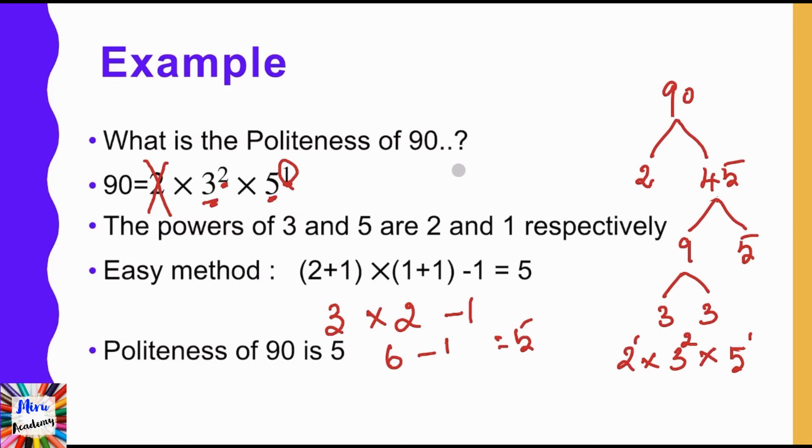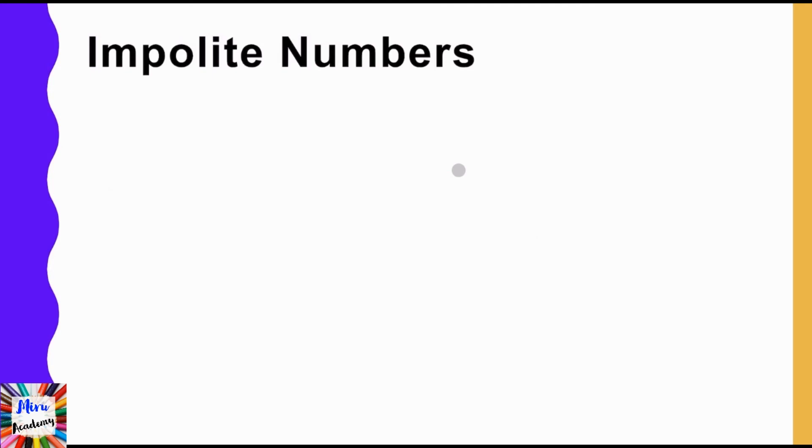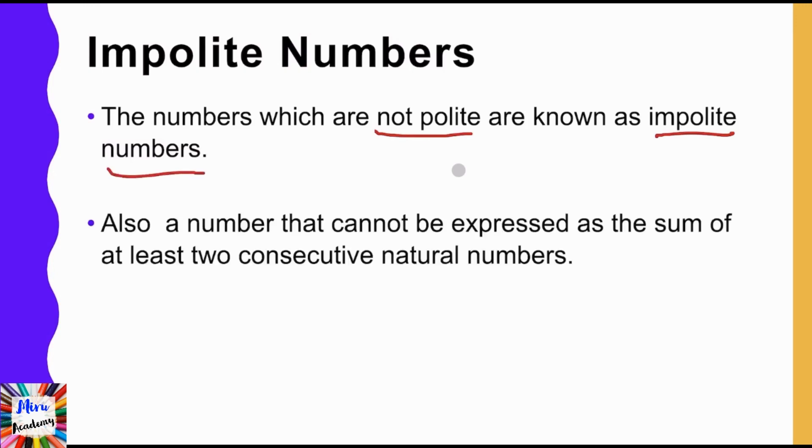Now can you find any numbers which are not polite? Yes, the numbers which are not polite are said to be impolite numbers. That is nothing but numbers which cannot be expressed as a sum of at least two consecutive natural numbers.